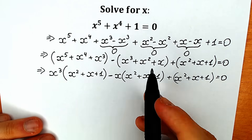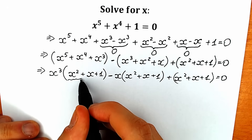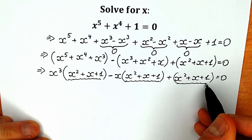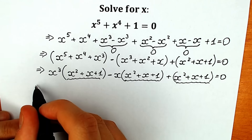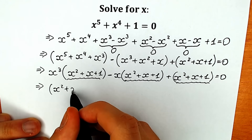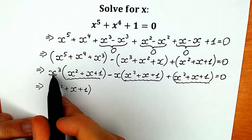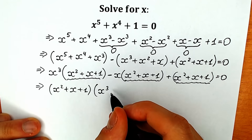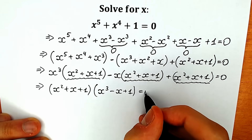Now if you look closely, you understand why I did this tricky move — because we have x square plus x plus one in all three groups. So we can easily factor this common expression. As a result we get (x square plus x plus one) times (x cube minus x plus one) equal to zero.